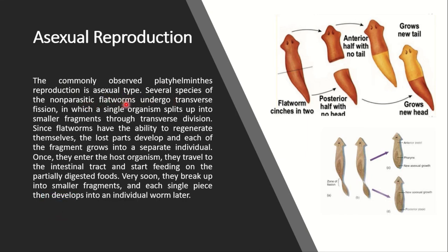Several species of non-parasitic flatworms undergo transverse fission, in which a single organism is split into smaller fragments. As you can see, through transverse fission, one individual is divided or split into two different individuals.